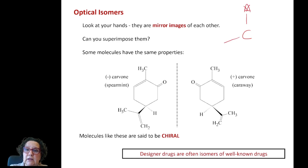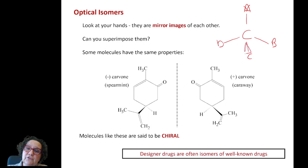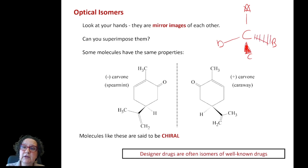When you have a carbon with single bonds attached to substituents A, B, C, and D, that is actually a tetrahedron. So for example, the bond to substituent C is pointing towards you — away from the screen — and the bond to substituent B is pointing towards the back of the screen, away from you.